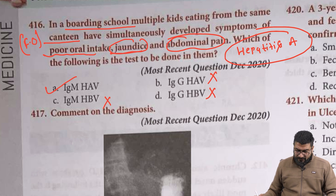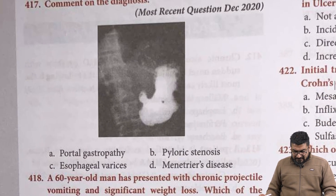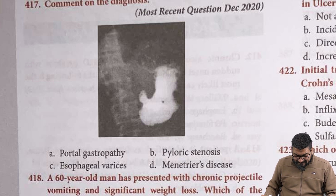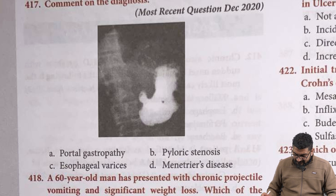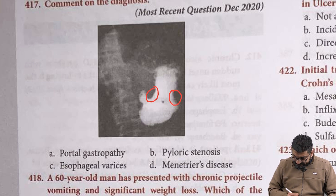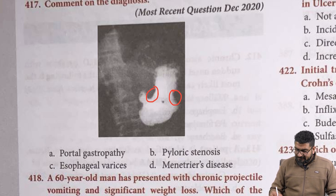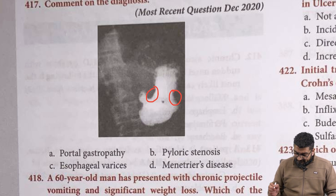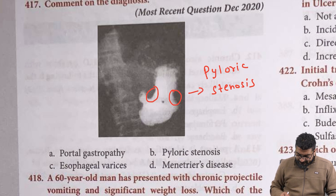Next image-based question: comment on the diagnosis. The pattern visible — showing a niche in the pyloric area — is seen whenever there is stenosis in the pyloric region. This is what we call pyloric stenosis.